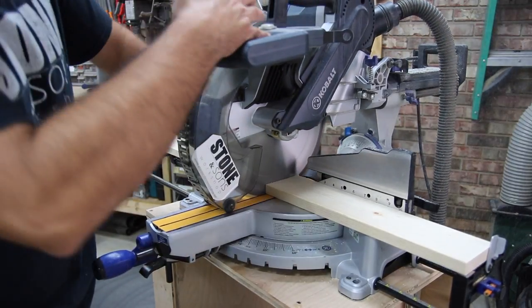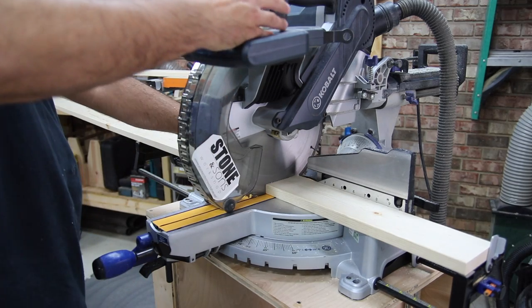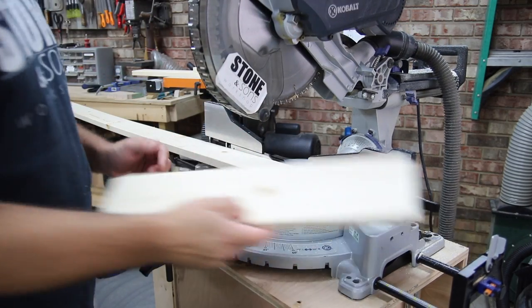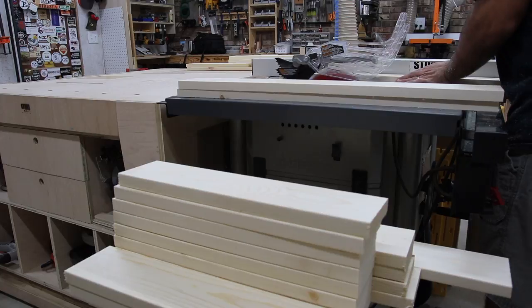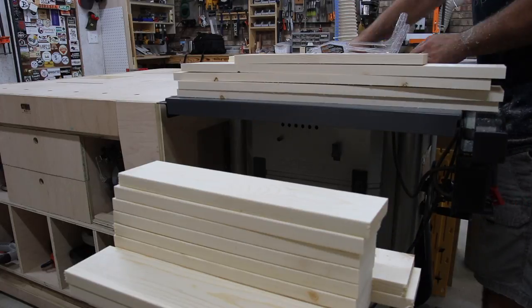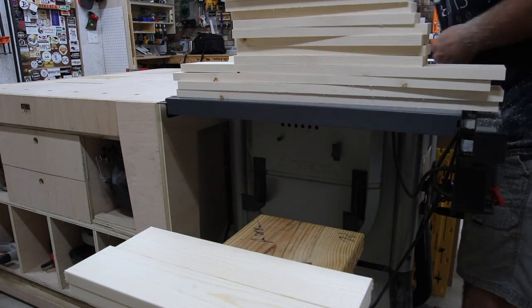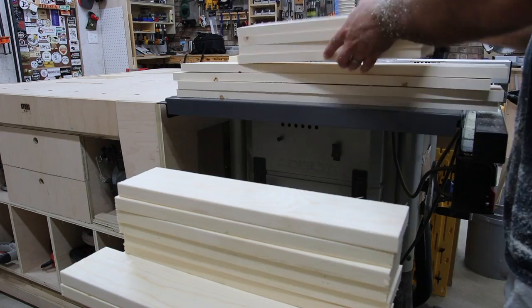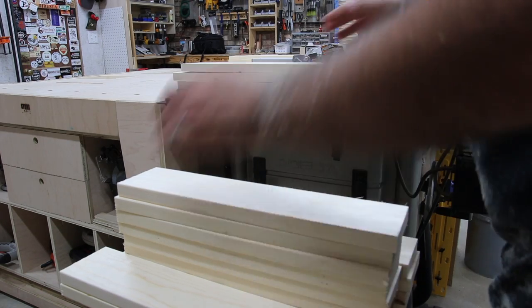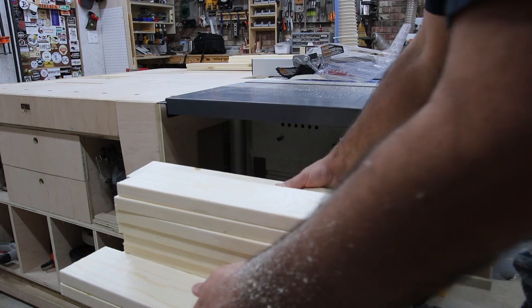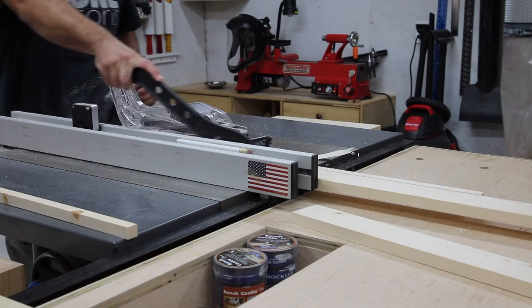I'm doing that here at the miter saw. The next step after I get all of those cut down is to take it to the table saw and clean up one edge to get a really nice and crisp edge. Then I'll flip all the parts over, take it back to the table saw, and according to the plan, rip everything to its final width.